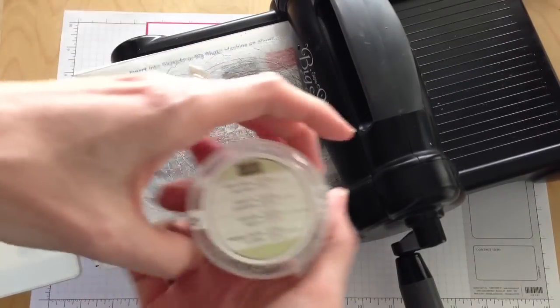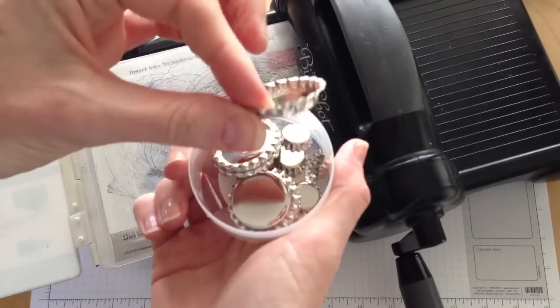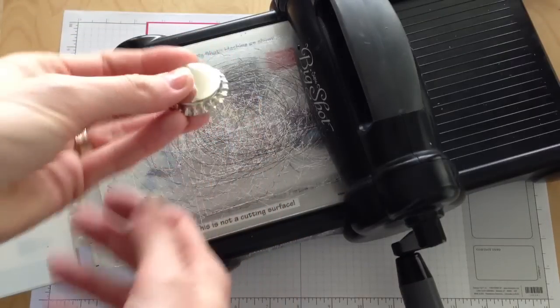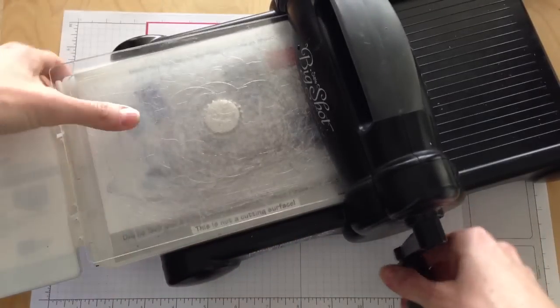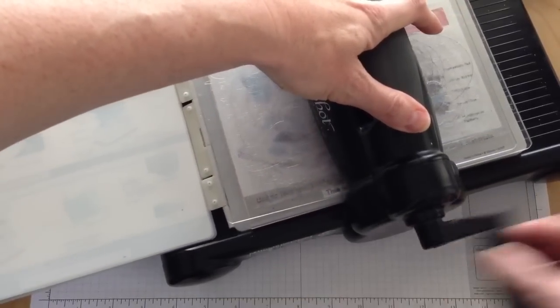Now I'm going to get my little soda pop-tops. When you get yours you'll get eight large and eight small. We'll pull one out and now I'm just going to place it face down and then put another clear acrylic pad on top and run it through.